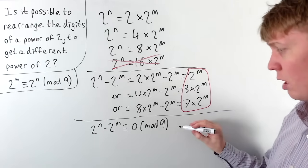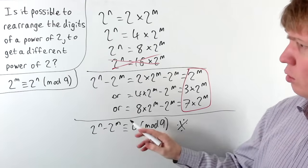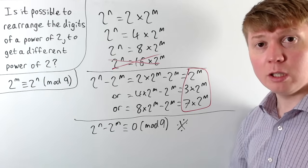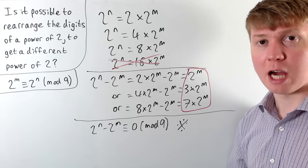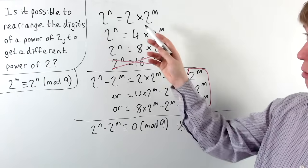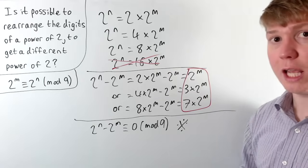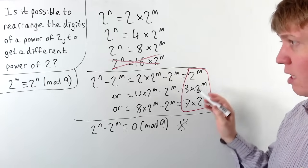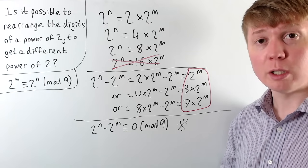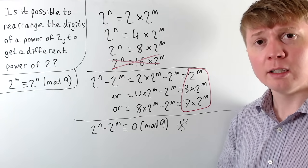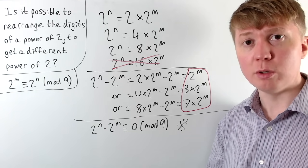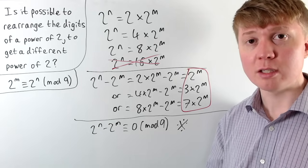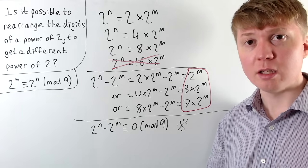This gives us a contradiction. In order for one power of 2 to be a digit rearrangement of another, they would need to be equivalent modulo 9, which requires their difference to be a multiple of 9. But the only possible differences — 2^m, 3·2^m, and 7·2^m — can never be multiples of 9. So it is not possible to take a power of 2, rearrange its digits, and get another power of 2.